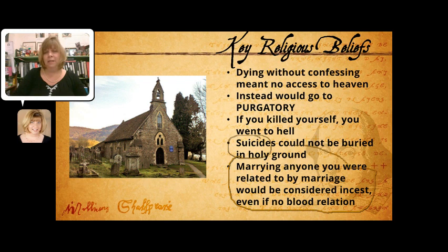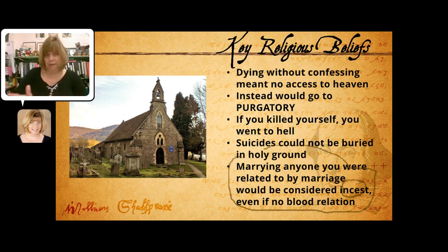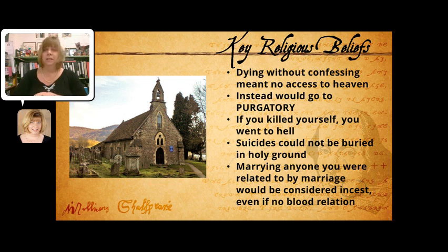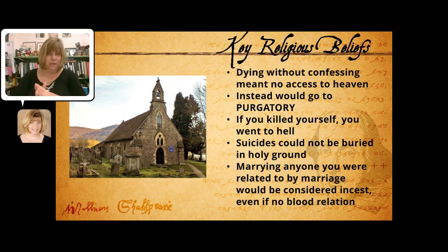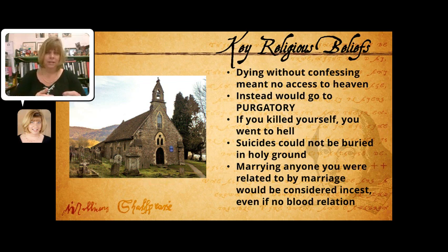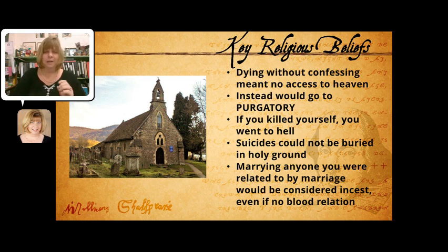There's also a different concept of incest to understand. Today we think of incest as a romantic relationship between blood relatives. But in Shakespeare's time, and by extension in this period of Denmark in the play, incest would include anyone you were related to by marriage — even without any blood relationship. So if two people had formerly been married to a pair of siblings and then got together, that would be considered incest. This helps explain why the characters react the way they do in ways we might not quite understand in a modern sense.